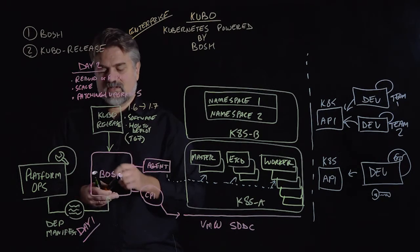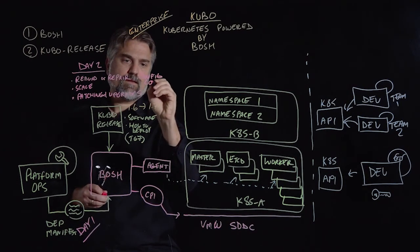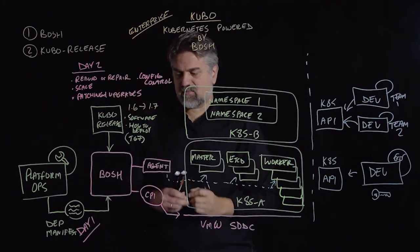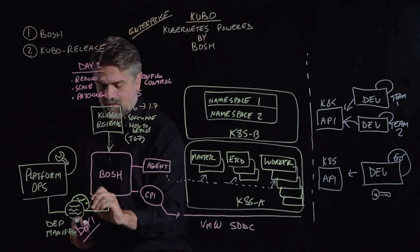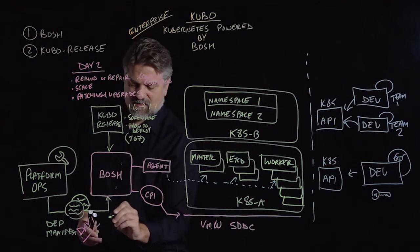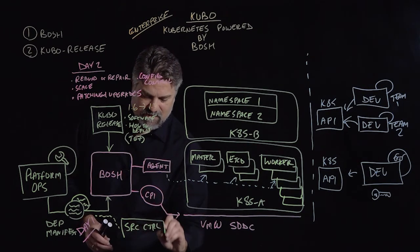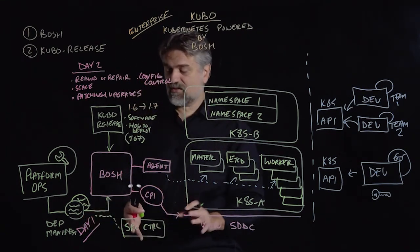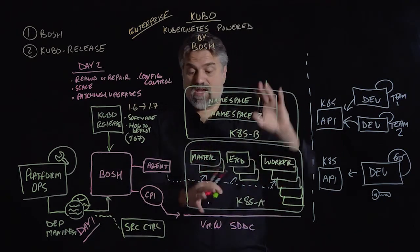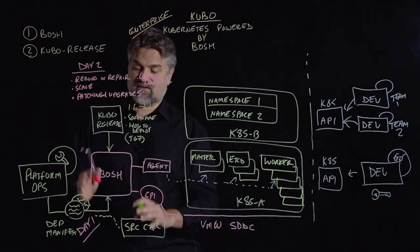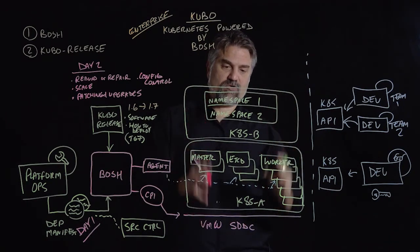Finally, from a day two perspective, you might want configuration control. We can do this pretty simply — we've got our deployment manifests for our multiple Kubernetes clusters, and we can check these manifests into source control, something like Git. That gives us an audit process to see who made what changes from a platform operator perspective to make our Kubernetes clusters scale or get created. In addition, BOSH will log all these operational tasks so we can get compliance and auditing visibility into who is taking operator actions against these Kubernetes clusters.